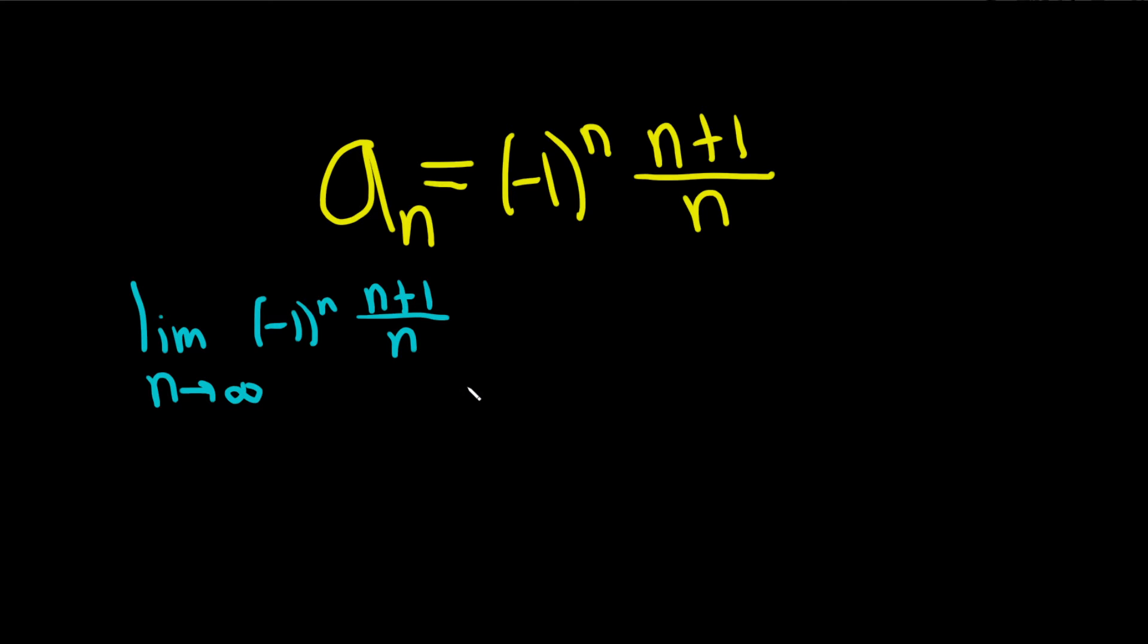And if we get a number as an answer, then we say the sequence converges to that number, and that number is called the limit. If we don't get a number, then we say the sequence diverges.